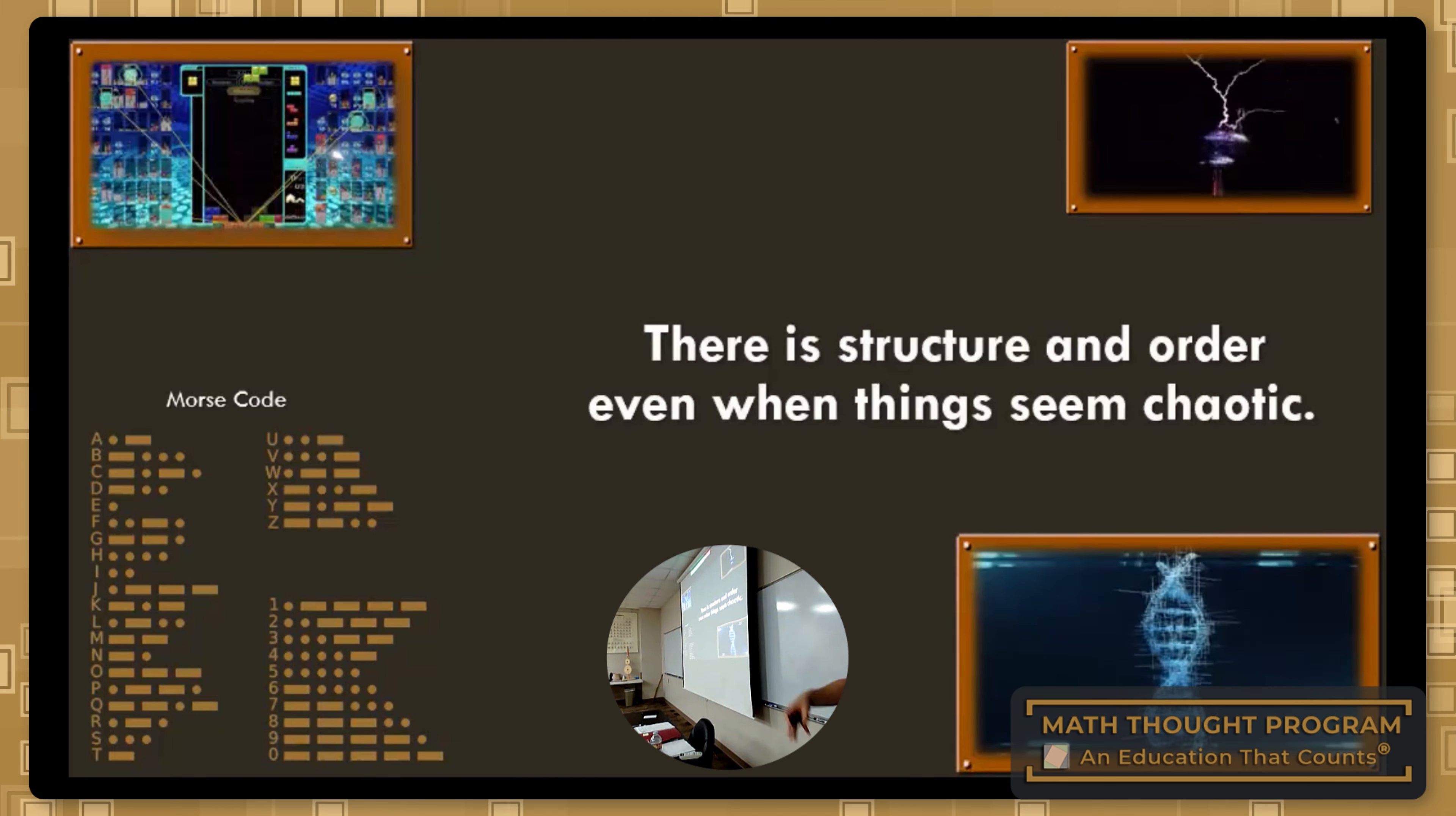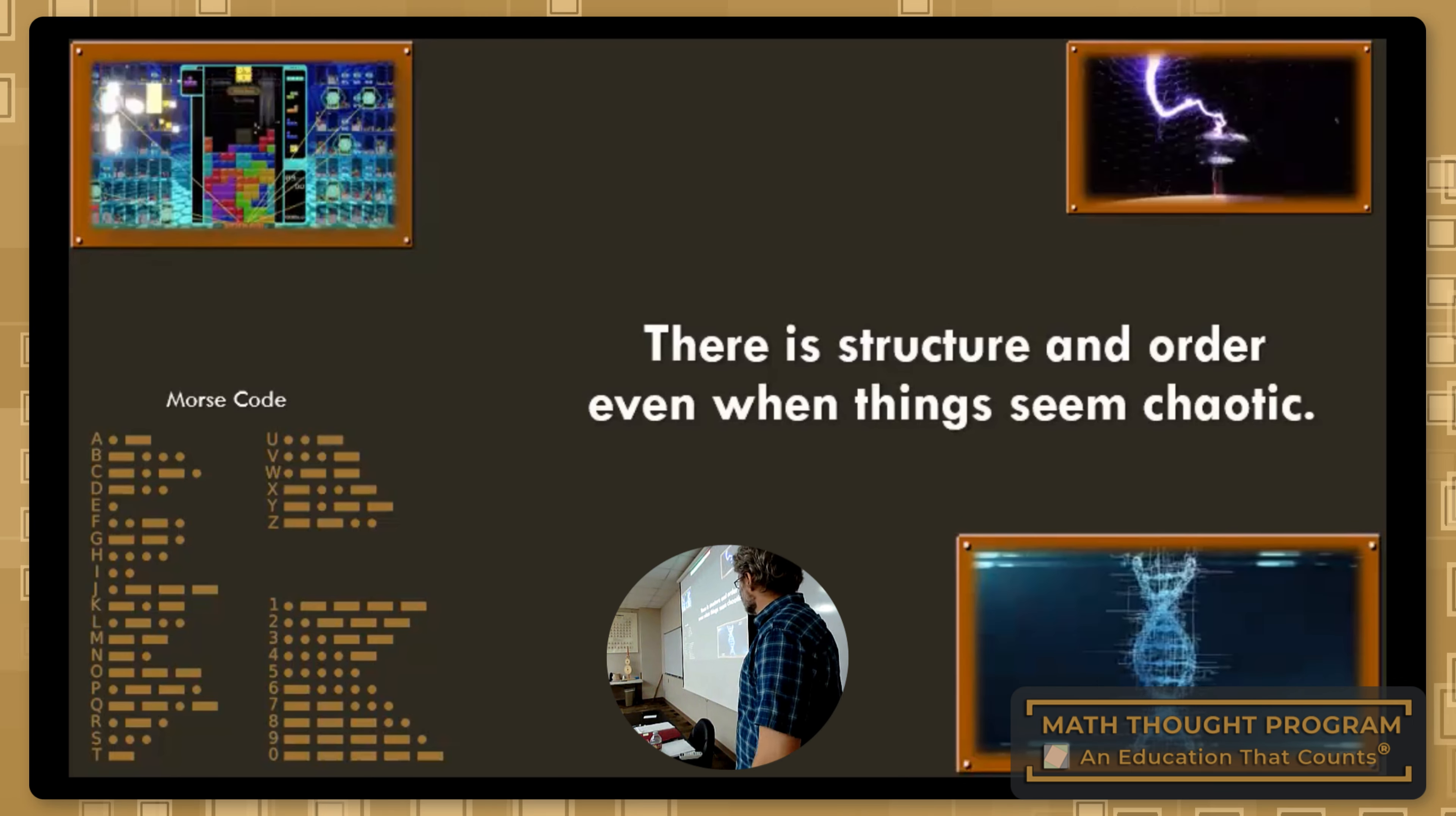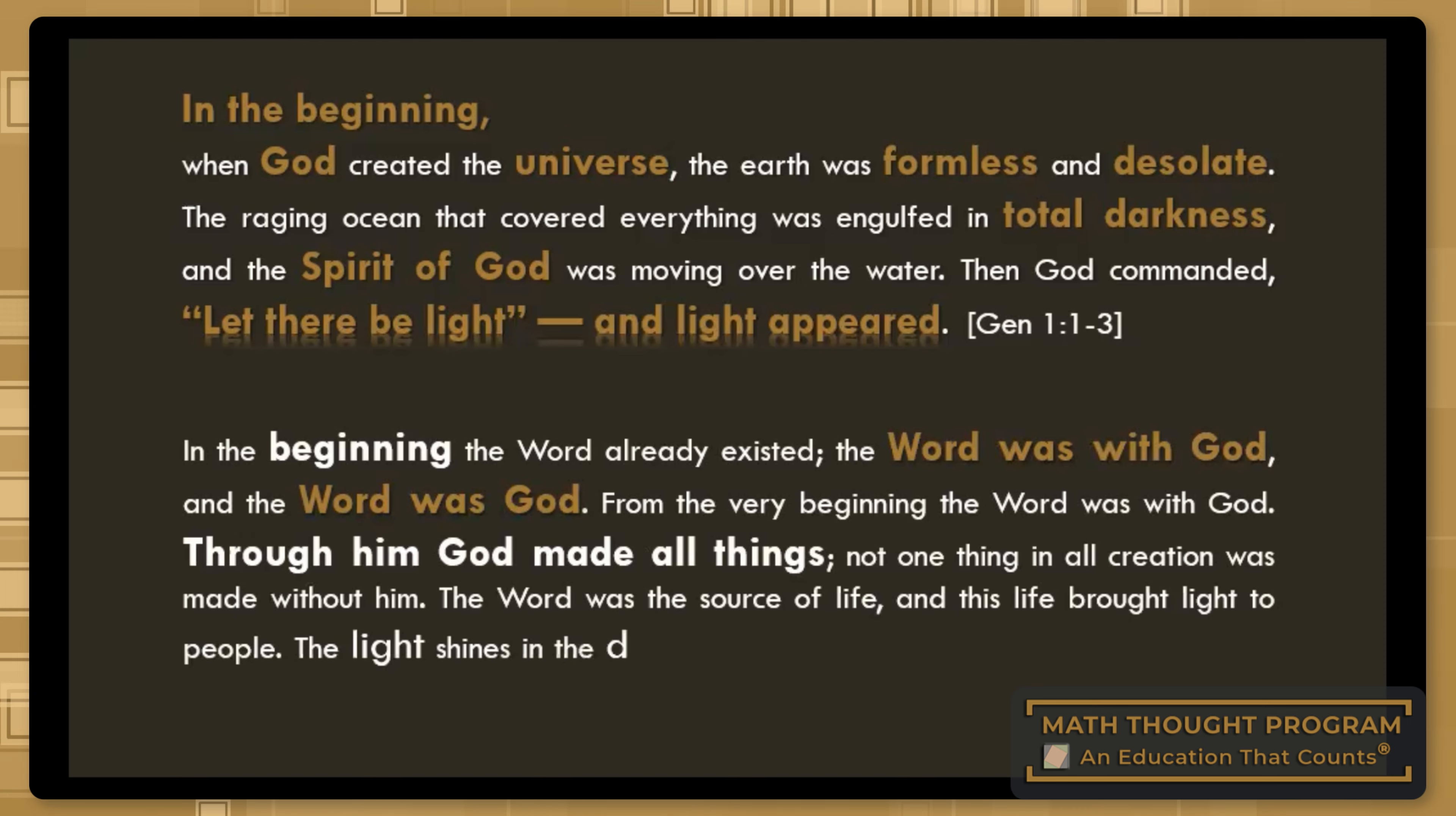So there is structure and order in things, even when we see things are chaotic. Even in your life, sometimes your life seems very chaotic. Maybe God's putting you through some kind of test to grow you in your faith. And it seems very chaotic and you don't really see what's going on, but there is pattern there. There is something being played out behind the scenes. In the beginning, when God created the universe, the earth was formless and desolate. The raging ocean that covered everything was engulfed in total darkness, and the spirit of God was moving over the water when God commanded, let there be light and light appeared.